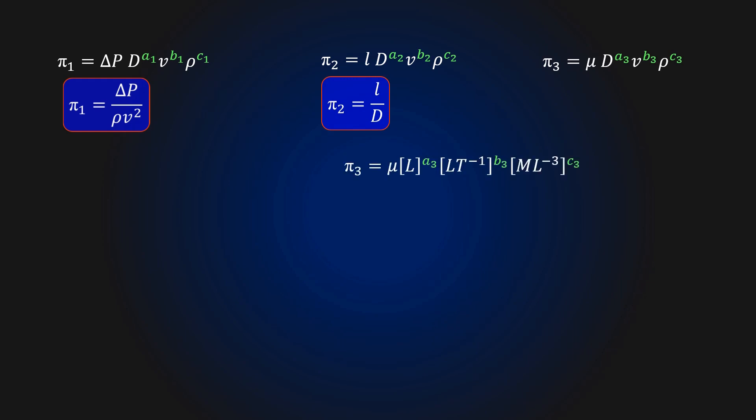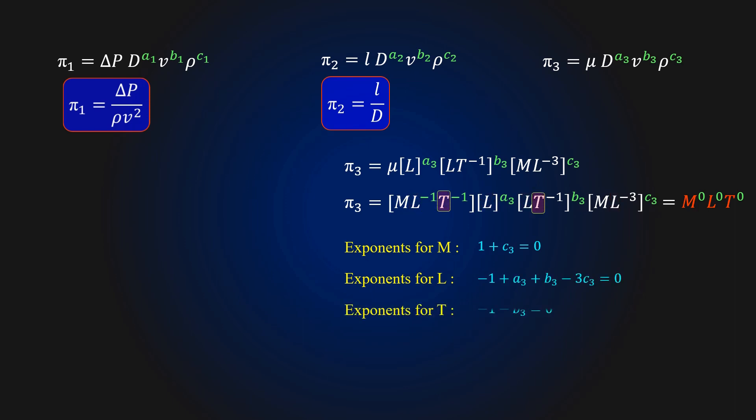For pi3 expression, we equate exponents of the primary dimensions of these parameters to 0. The equation for exponents of mass is given as, the equation for exponents of length is given as, the equation for exponents of time is given as. On solving we get c3 equal to minus 1, b3 equal to minus 1 and a3 equal to minus 1. Finally, we get the expression for pi3 as mu by rho vd.